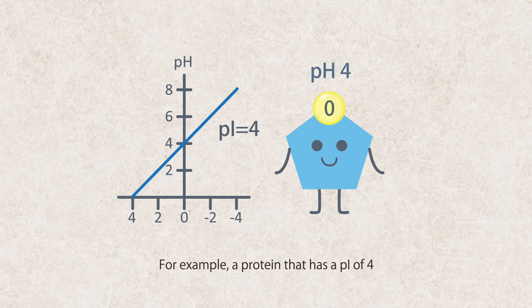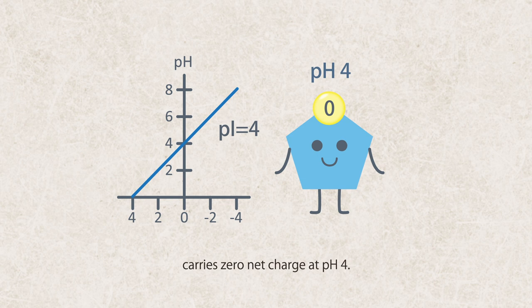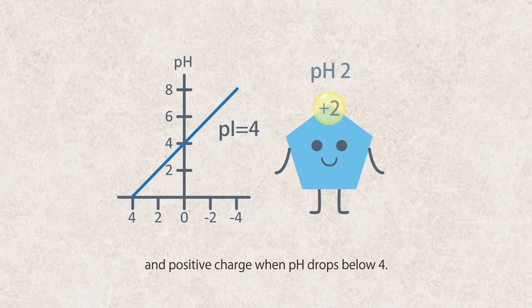a protein that has a PI of 4 carries zero net charge at pH 4. This protein will carry negative charge when pH is above 4 and positive charge when pH drops below 4.